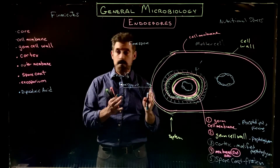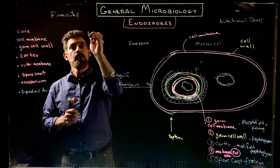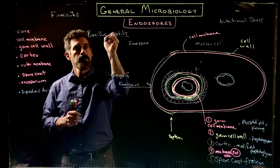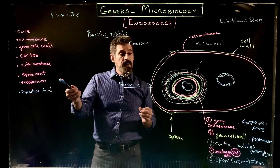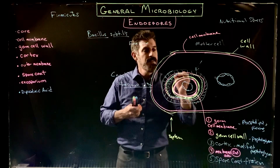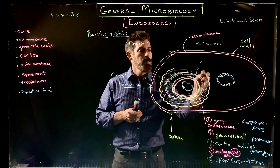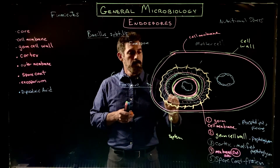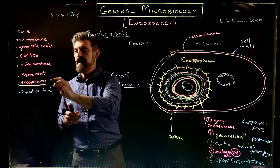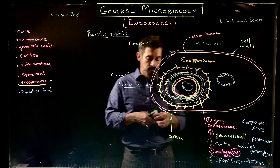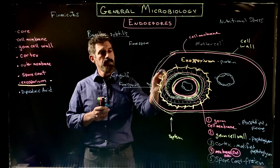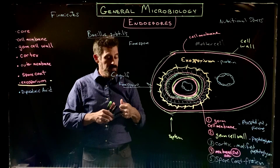In Bacillus subtilis, which is the organism most well studied for endospores, that would be the end of the layers. But what we found is that actually a lot of other Firmicutes produce yet another additional layer outside of this called an exosporium. The exosporium is also protein, and it's used in binding — there are little fibers that stick out of it and help the spore attach to a number of other structures.